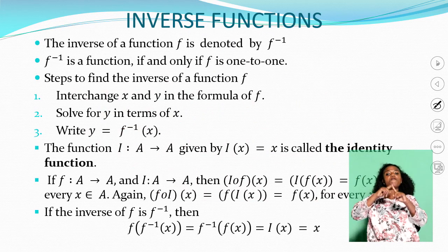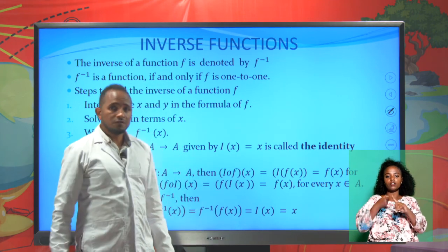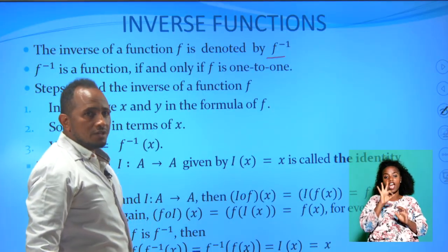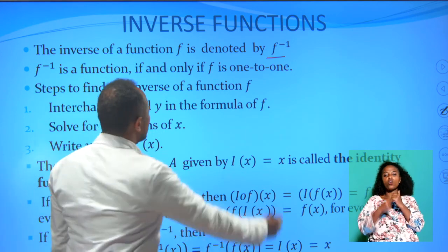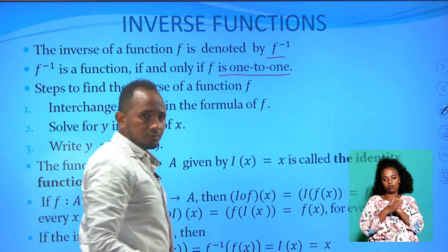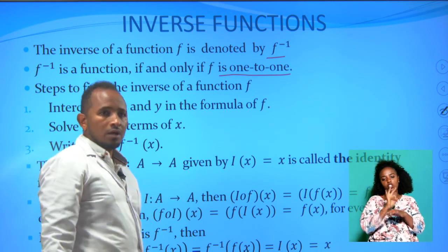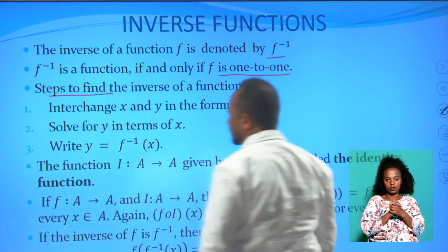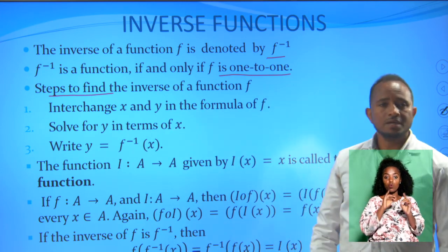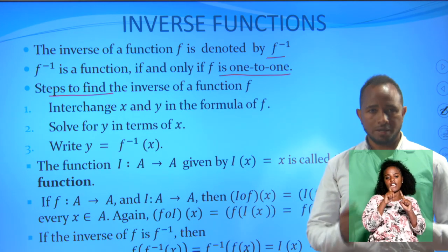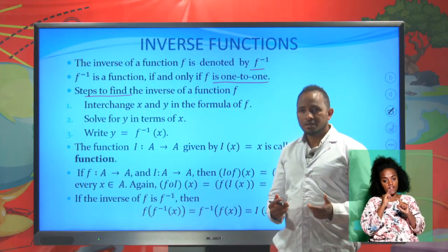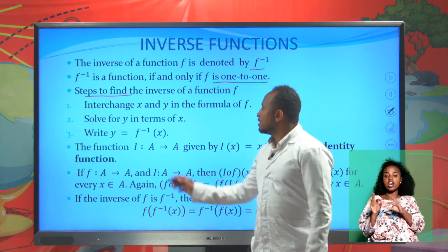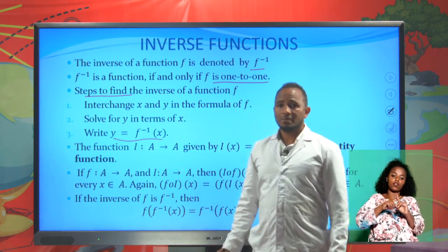Let's now look at inverse functions. The inverse of function f is denoted by f inverse. The inverse is a function if and only if f is one-to-one. To find the inverse: first interchange the variables x and y in f, then solve for y in terms of x, and finally replace y by f inverse of x.